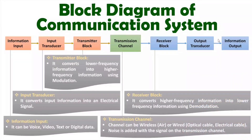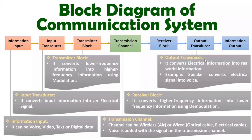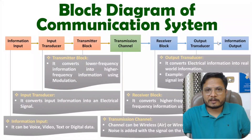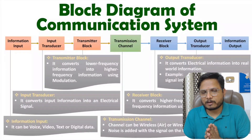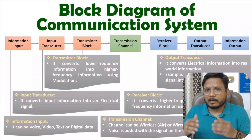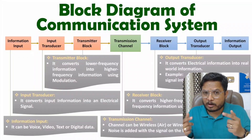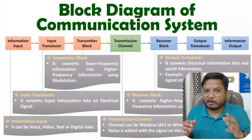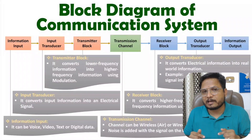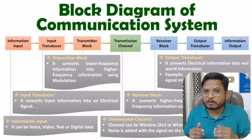So at the output transducer we perform conversion of the electrical signal into real-world information. For example, if you have a speaker as a transducer, it converts the electrical signal into a voice signal. That is the complete process of the communication system. This is the general block diagram. In this video lecture series on analog communication, I will explain each and every block with great clarity along with modulation. If you have any confusion, please place it in the comment section — I will be happy to help. Thank you so much for watching this video.